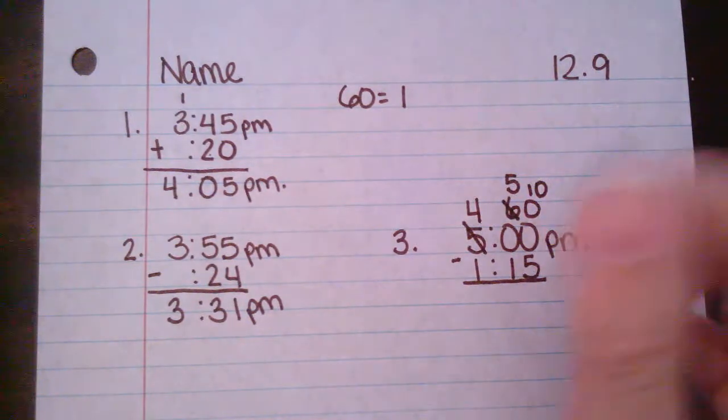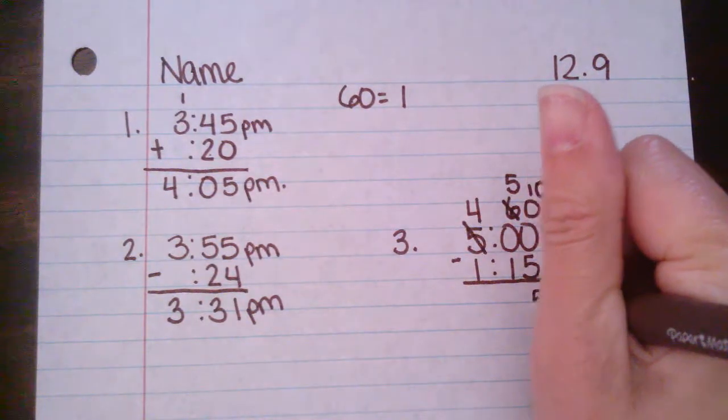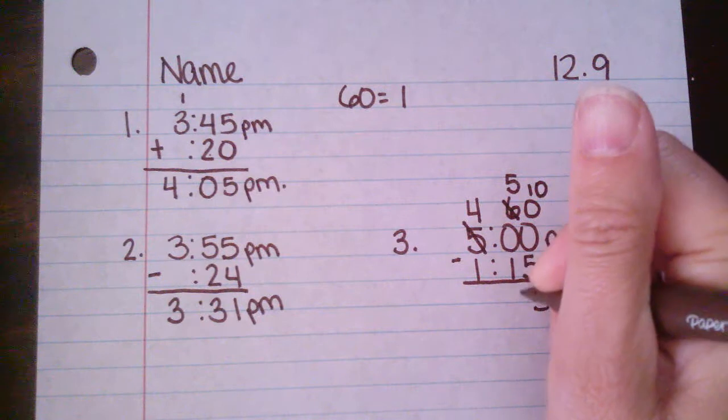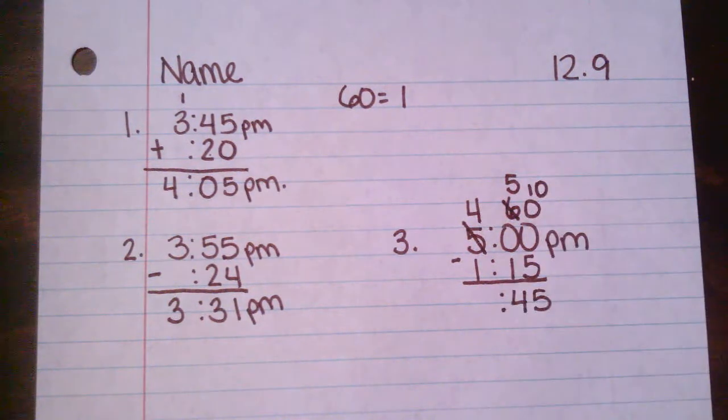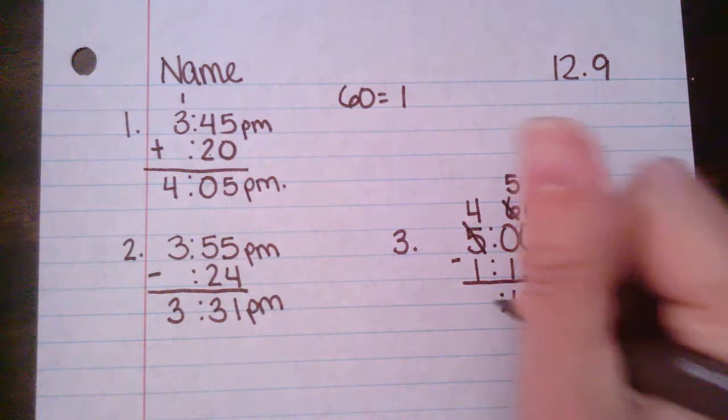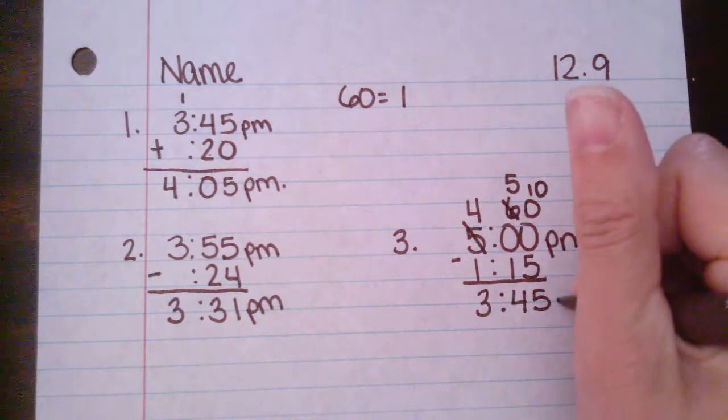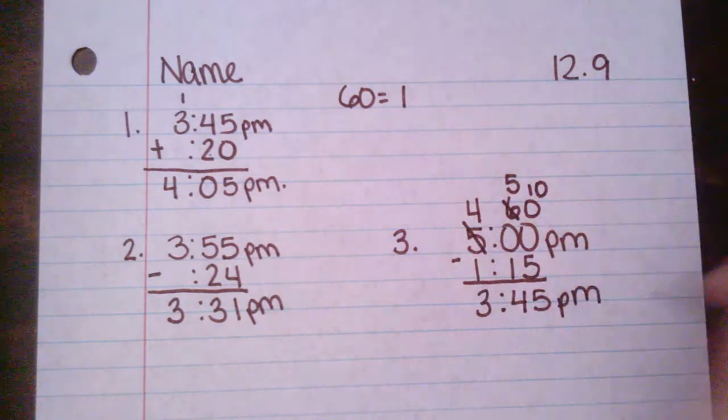So 10 minus 5 will give me 5. 5 minus 1 will give me 4. 4 minus 1 will give me 3. She started at 3:45 p.m.